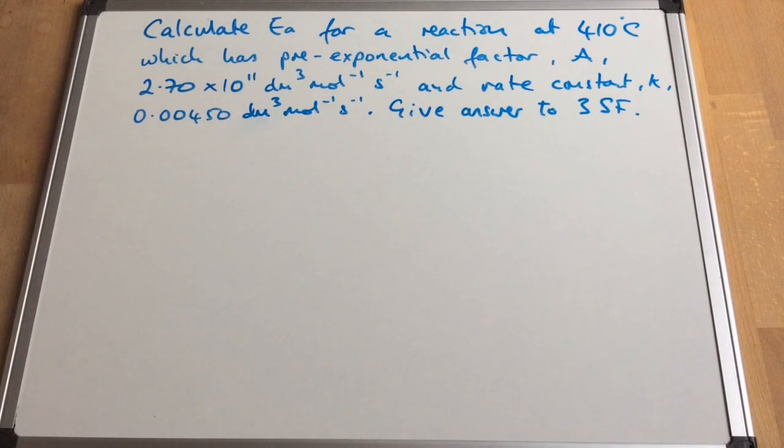So here's the first calculation and in this one we're going to calculate the activation energy for a reaction at 410 degrees C. We are given the pre-exponential factor, you can see it's written up there, and the rate constant is given as well. And you can see that we need to give our answer to three significant figures.